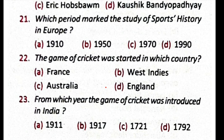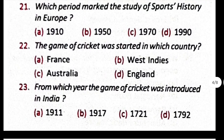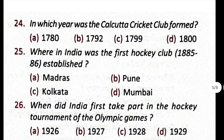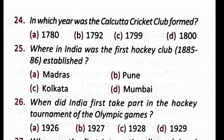Question number 22: the game of cricket was started in which country? The correct option is D, England. Question number 23: from which year was the game of cricket introduced in India? The correct answer is C, 1721. Question number 24: in which year was the Kolkata Cricket Club formed? The correct answer is B, 1792.